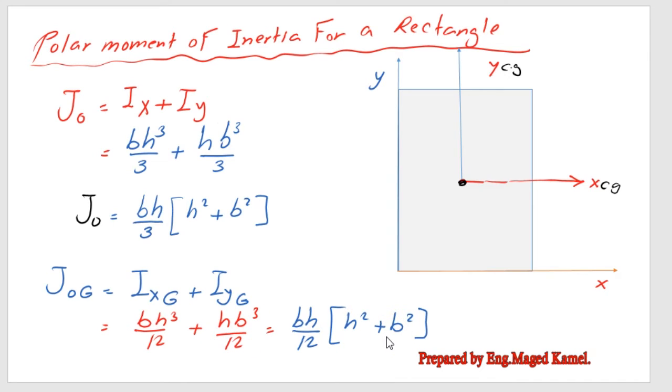We have common BH over 12 and then we have one bracket, we will put H squared plus B squared inside the bracket. That's why we have the expression of the polar moment of inertia for both the external two axes and as well as the X and Y axes passing by the CG. Thanks a lot and see you in the next lecture, goodbye.